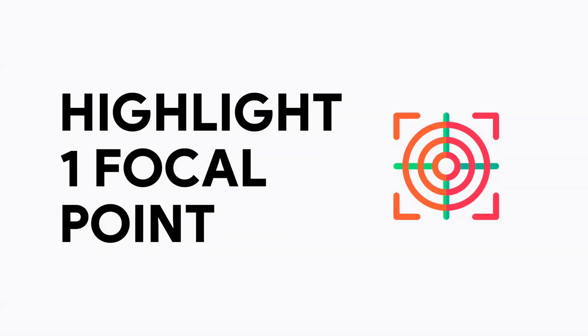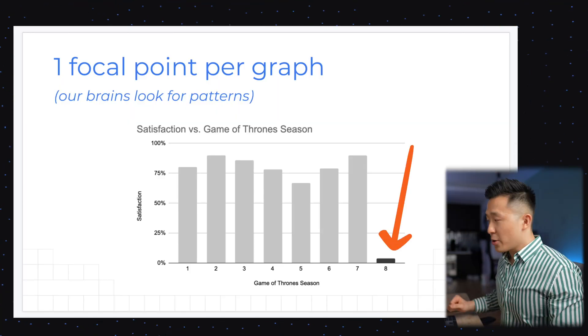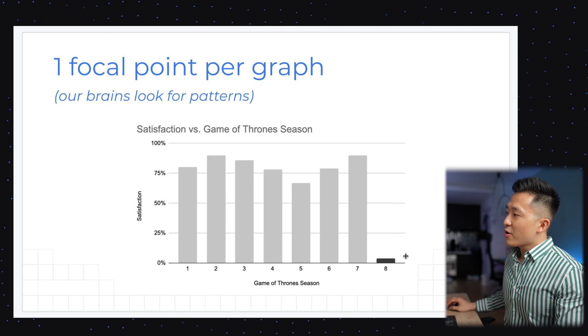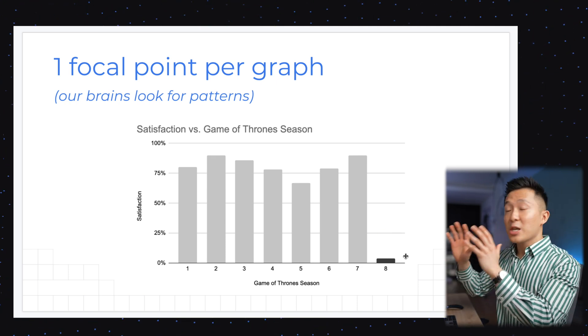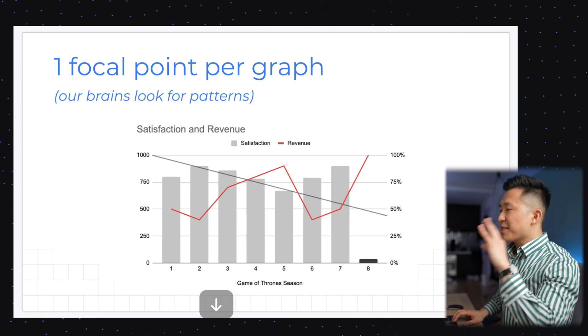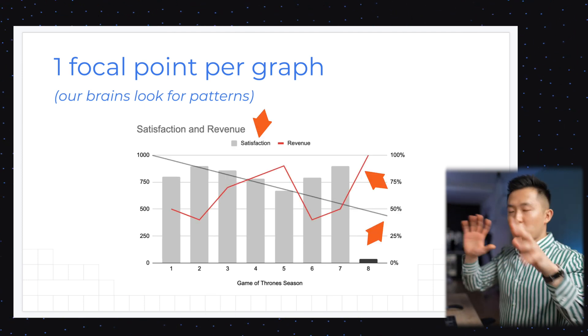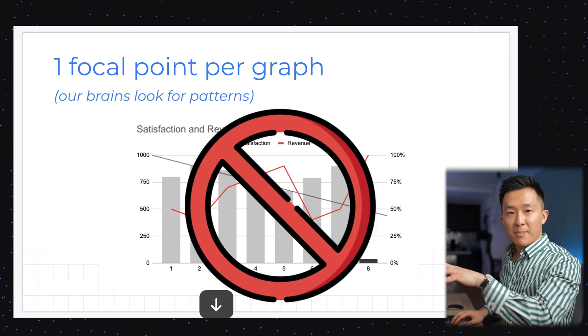Data presentation tip number two: there should only be one focal point for any table, chart, or graph. This is because our brains are wired to recognize patterns and we immediately notice things that are out of the ordinary. Leverage this behavior to easily focus your audience's attention on the one thing you'd like for them to take away. To give a counterexample, this chart only has three elements, but our brains still struggle in the first few seconds to really understand what's going on here. So not recommended.